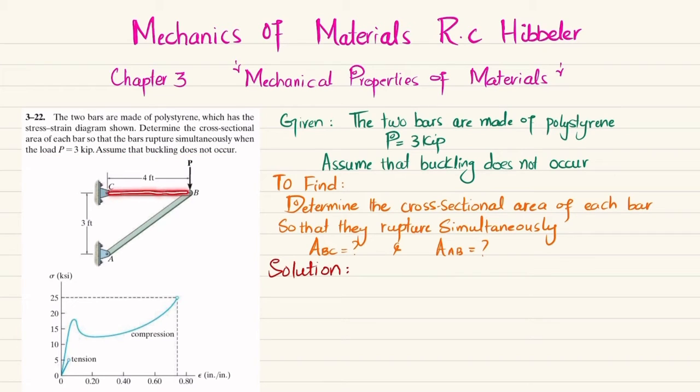So you can see this is bar BC and this is bar AB that is acted upon by load P which is 3 kips. And there is a stress strain diagram for the bar in tension and for the bar which is in compression. We need to find the cross-sectional area of BC and AB so that these bars rupture simultaneously. So let's start with the solution.